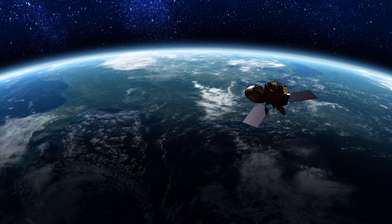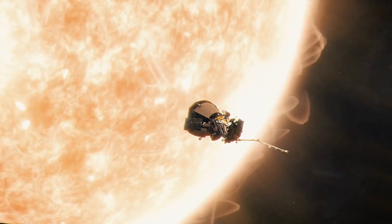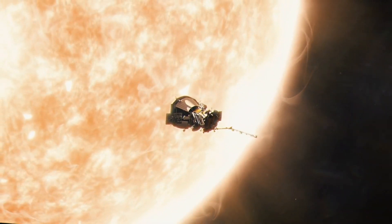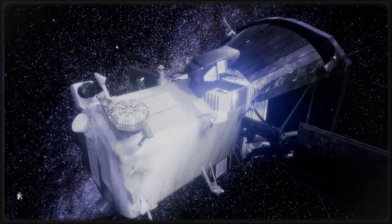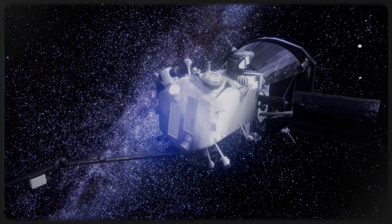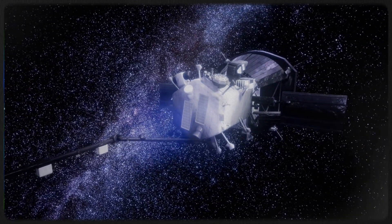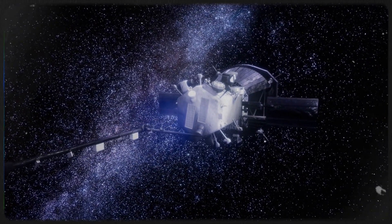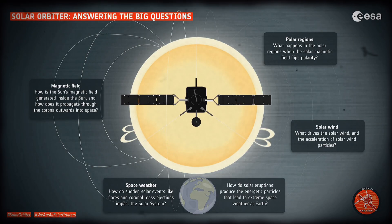The Parker Solar Probe and Solar Orbiter are equipped with state-of-the-art instruments tailored for innovative solar research. As the Parker Solar Probe journeys through the solar corona, scientists anticipate that it will unlock crucial insights into the mechanisms behind the solar wind and solar energetic particles. Meanwhile, the Solar Orbiter's distinctive orbit and its comprehensive suite of instruments are poised to offer a holistic view of the sun's atmosphere, magnetic field, and solar wind.